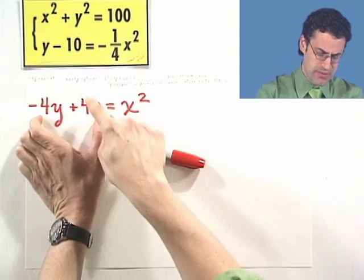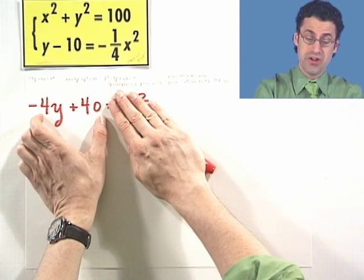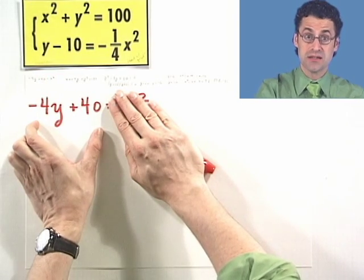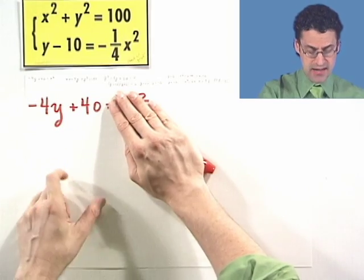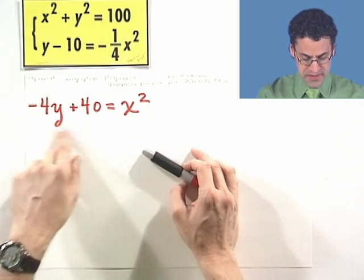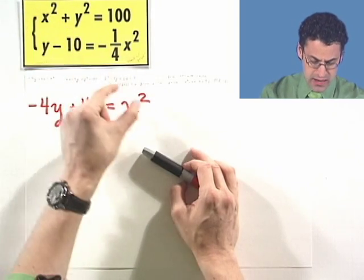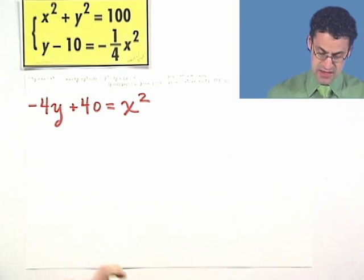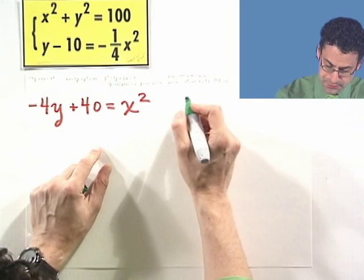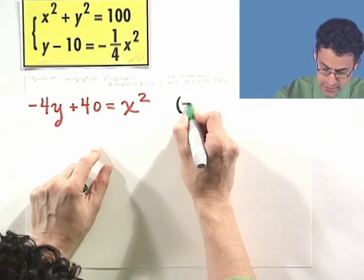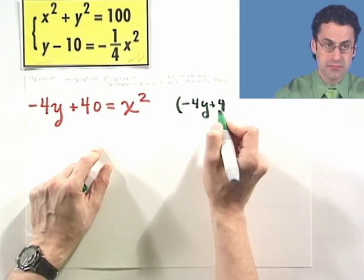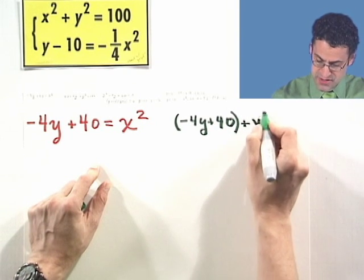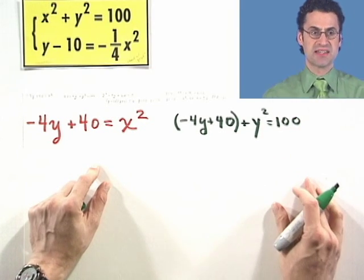Why would I want to do that? It seems like I'm making things worse by replacing one term with two terms. But notice that there are no x's left — all I've got are y's, and then I can solve for y. So inserting the expression for x squared into the first equation, I get: negative 4y plus 40 plus y squared equals 100.